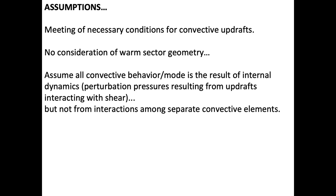combining the moisture and instability to get buoyancy. But we're just talking about sufficiency — not needing 2,000 joules per kilogram of mixed layer CAPE, just sufficient conditions for an updraft. We're not going to consider any components of warm sector geometry relative to the flow within the atmosphere in terms of its tendency to support upscale growth through convective interactions. We're going to assume that all convective behavior and mode of evolution is the result of internal dynamics — the perturbation pressures that result from updrafts interacting with the vertical shear, not the interactions between separate convective elements like cold pools merging along a boundary.